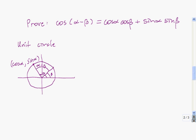Similarly, over here, the x-coordinate, since the angle is beta, is cosine of beta, and the y-coordinate is sine of beta. So this is one of the two diagrams we're going to use in the proof.